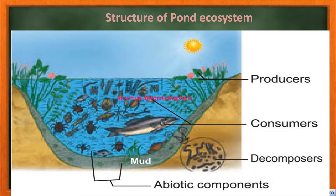Biotic components are classified into producers, consumers, and decomposers. Producers are plants that can produce their own food — autotrophs. A variety of phytoplanktons like Oscillatoria, Anabaena, Chlamydomonas, algae like Spirogyra, Melothrix, Oedogonium, and floating water plants like Azolla, Salvinia, Pistia, Nimbia, etc. constitute the producers of a pond ecosystem.